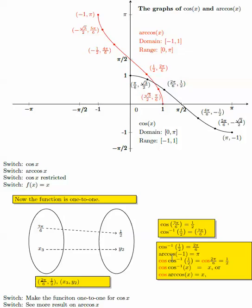Cosine inverse of 1 half is 2 pi over 6. Arc cosine is just another way to write cosine inverse. Arc cosine of negative 1 is pi — because cosine of pi is negative 1, so cosine inverse of negative 1 is pi. They switch. So when you see arc cosine of negative 1, do not give a negative value. These electronic notes are very useful for understanding.